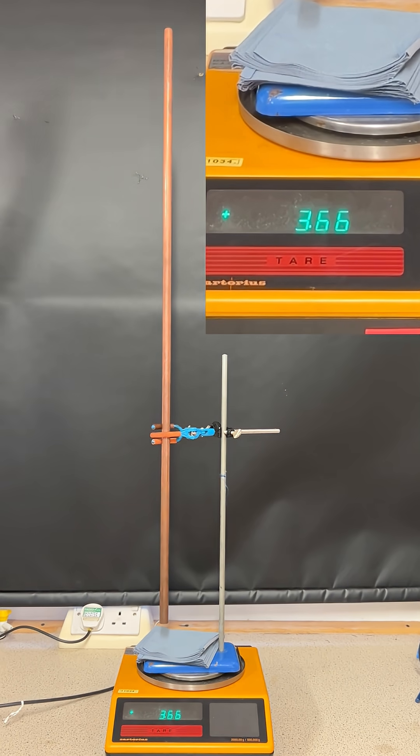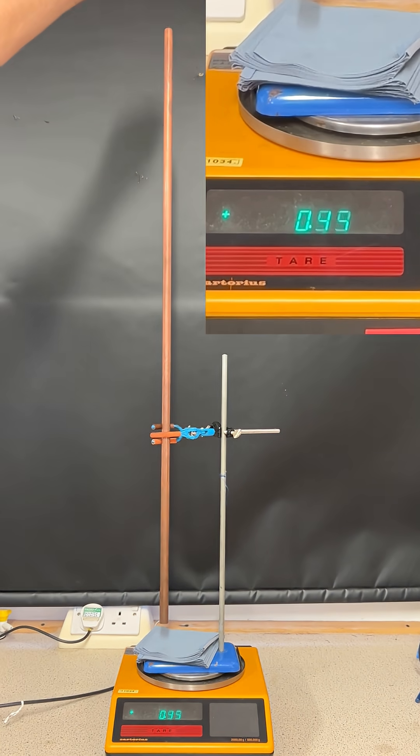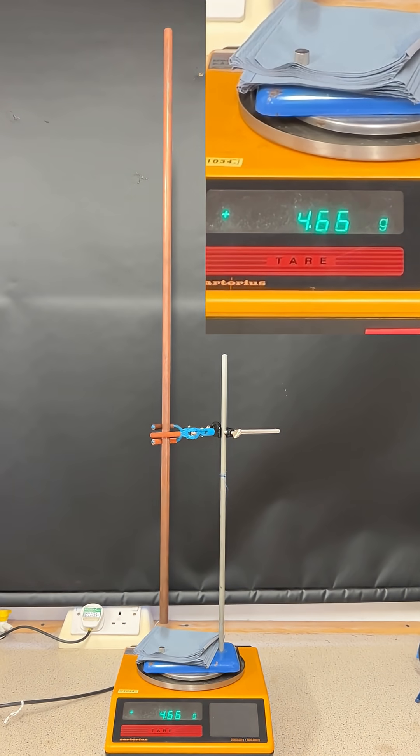We can see that the balance reading increases up to about 4.64 grams, but watch what happens. As the magnet lands, the balance reading finishes at almost exactly that amount of 4.64 grams with the magnet on the balance. So when we drop the magnet through the copper pipe, the reading on the balance increases up to the mass of the magnet and then it stops there.